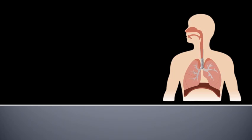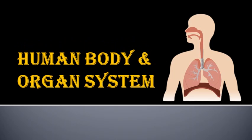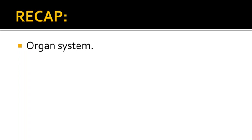Welcome, dear student. Today we will continue with the lesson Human Body and Organ Systems. This is Part 2 of this lesson, and in this video we will learn about the respiratory system — its structure and function. Before starting today's topic, let's have a quick recap of our previous video. We have seen that an organ system is a group of organs working together to perform a specific function.